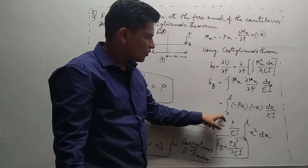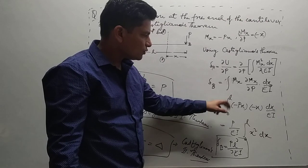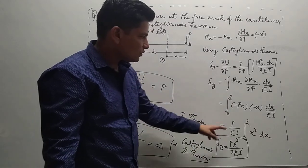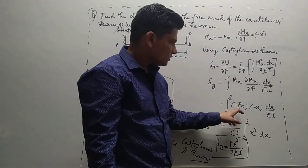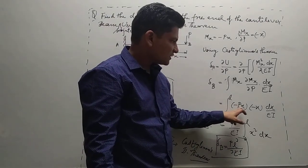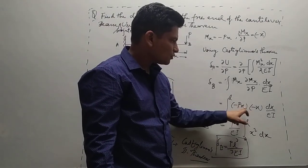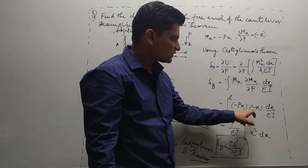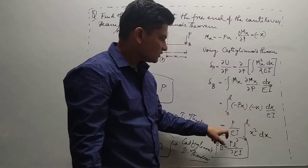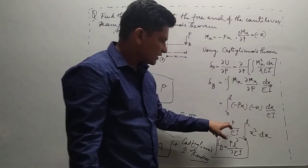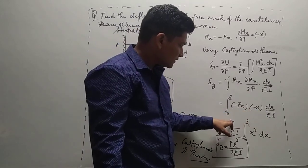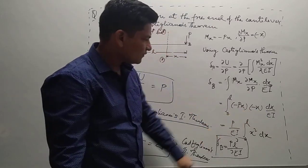After putting in all values from 0 to L, minus times minus gives plus, so we have plus Px². P is a constant, giving us P/EI times the integral from 0 to L of x² dx.